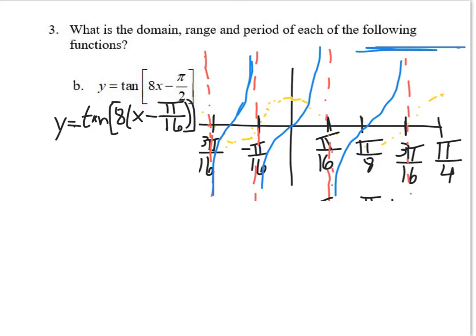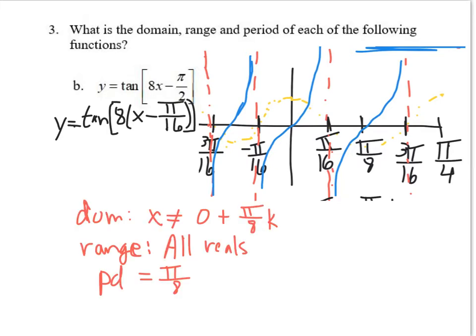Go ahead and write down the domain, range, and period for y = tan(8x − π/2). Not much changed. The period and range stay the same. The only change is the domain: the vertical asymptotes shifted right π/16 units. Looking at the asymptote that was at negative π/16, that's now at 0. So x cannot equal 0 plus (π/8)k, i.e., x cannot equal (π/8)k.